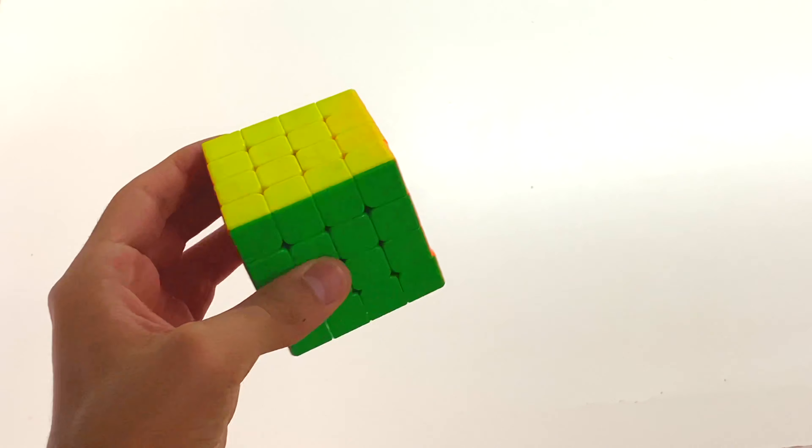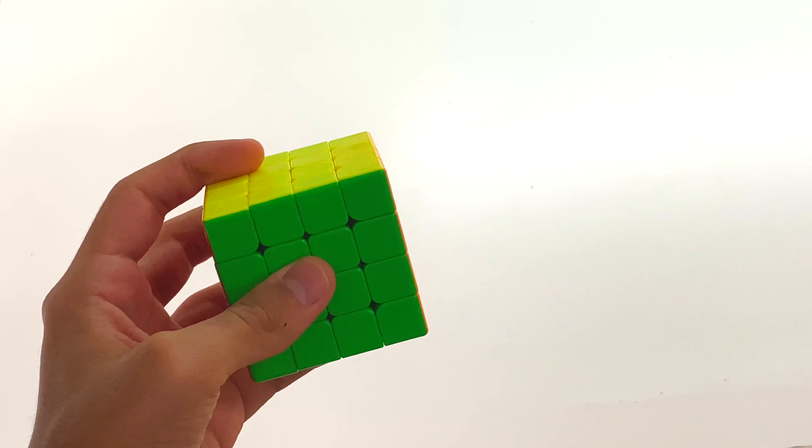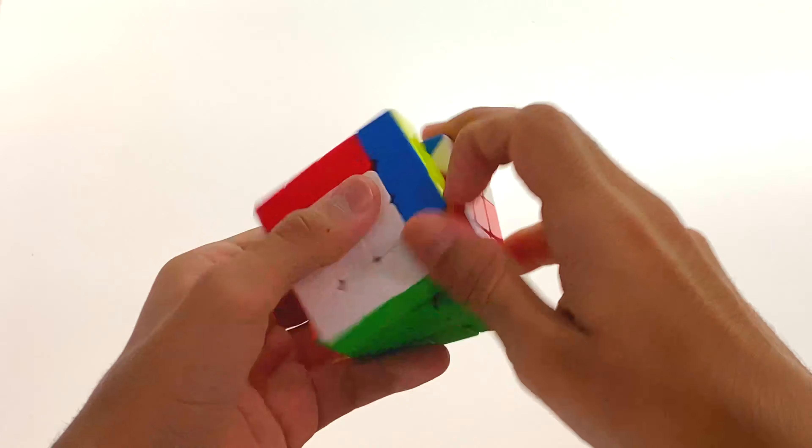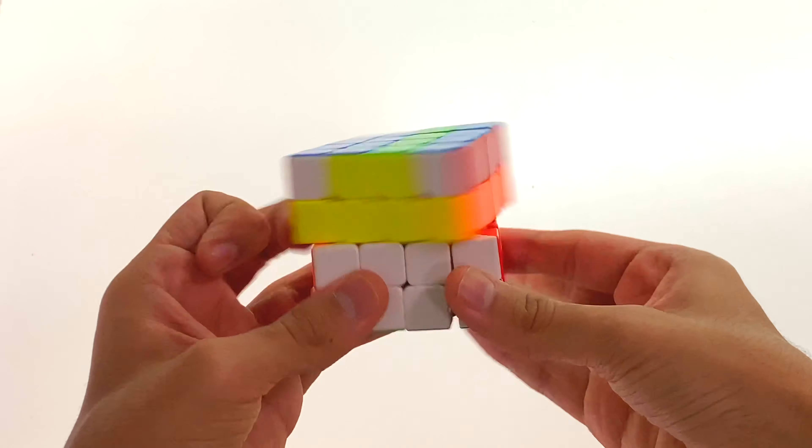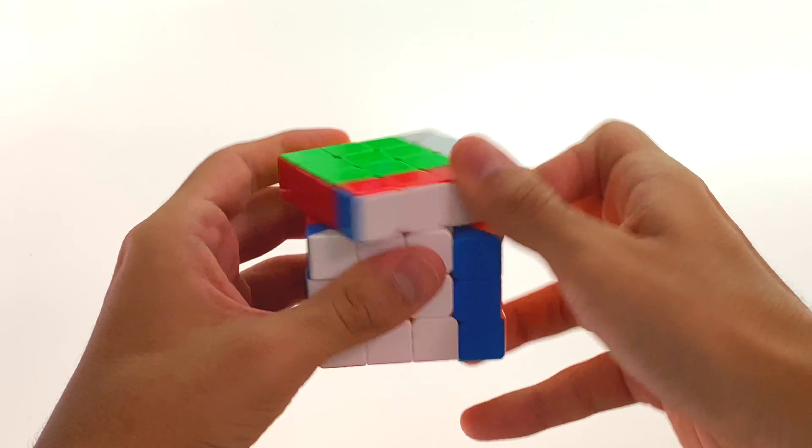The speed of this cube is about the same as the YJ MGC 4x4 and definitely faster than its predecessor, the Aosu GTS2M. I feel like the WRM combines the best of both of these cubes wherein its speed is nice and fast like the MGC but it has the amazing and reliable nature of the GTS2M.